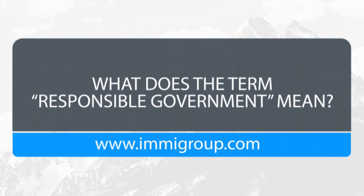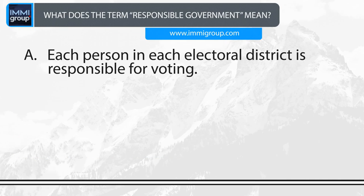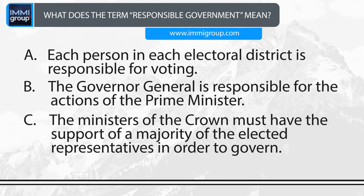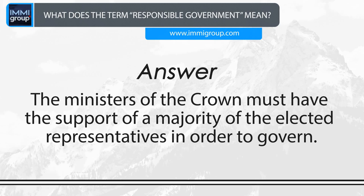What does the term responsible government mean? A. Each person in each electoral district is responsible for voting. B. The Governor-General is responsible for the actions of the Prime Minister. C. The Ministers of the Crown must have the support of a majority of the elected representatives in order to govern. D. All Canadians are responsible for each other. Answer: The Ministers of the Crown must have the support of a majority of the elected representatives in order to govern.